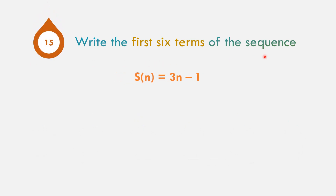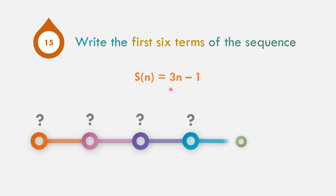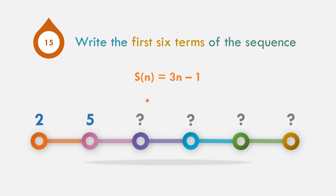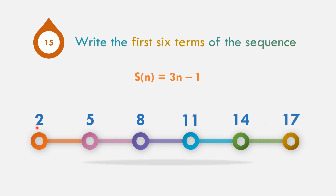In example number 15, write the first six terms of the sequence where s(n) equals 3n minus 1. Replace n by 1: 3 times 1 minus 1 is 2. Replace n by 2: 3 times 2 minus 1 is 5. Replace n by 3: 3 times 3 minus 1 is 8. The pattern adds 3 each time: 8 plus 3 is 11, plus 3 is 14, plus 3 is 17. The first six terms are 2, 5, 8, 11, 14, and 17.